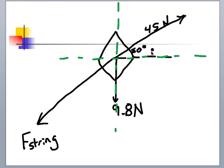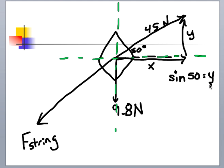The only force that is in both x and y that I'm resolving is this one. How much in the x is that acting and how much in the y is that acting? So I'm going to find those two components of the force. I take sine of 50 is the y over the hypotenuse, and cosine of 50 is the x over the hypotenuse.